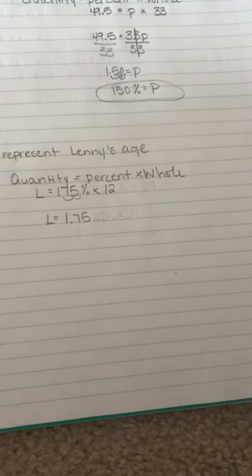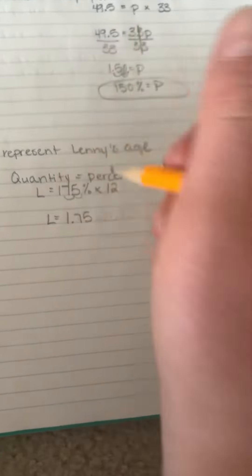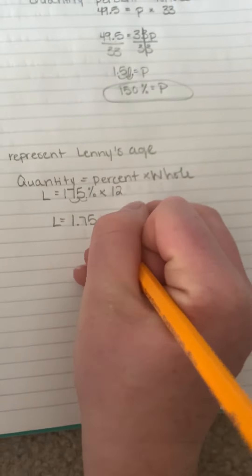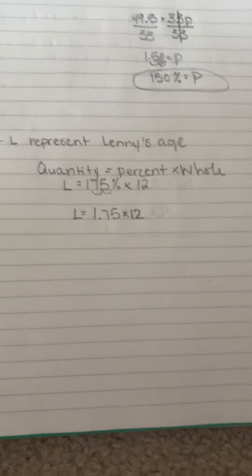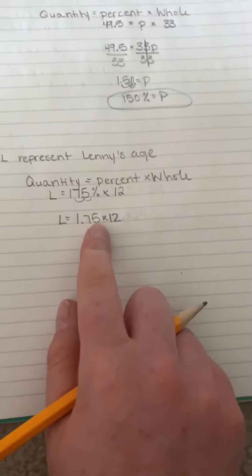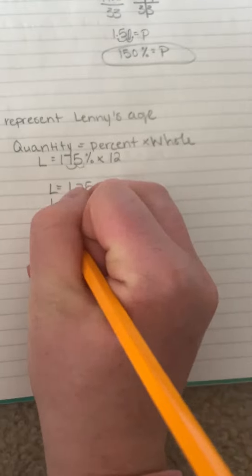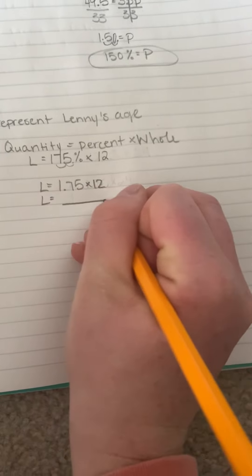So now it's not a percent, it's a decimal times 12. And I am not going to do this one. I got you this far. All you have to do is multiply to get Lenny's age, so you can do that on your own.